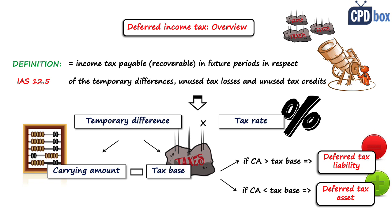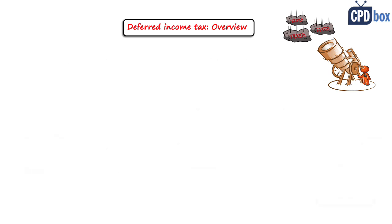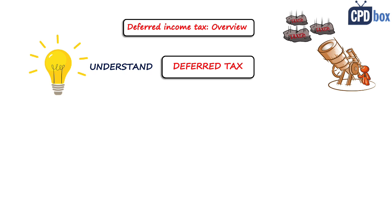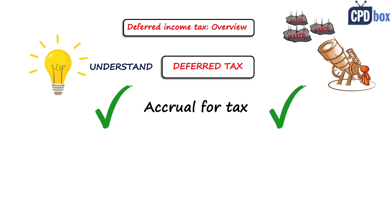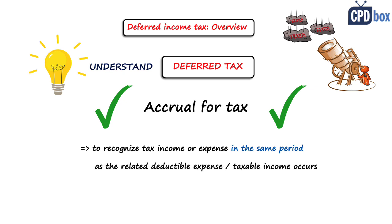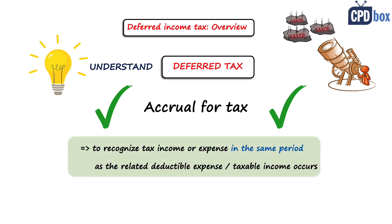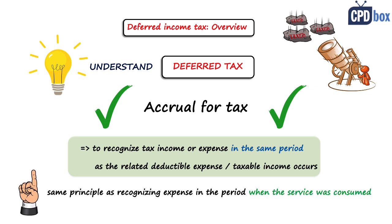These were official definitions, but what does that all actually mean? To understand deferred tax, let's make clear what it is not. It is not a tax that you will pay in the future. Instead, it is an accrual for tax or provision for tax, because the goal is to show the tax effect of some transaction in the same period as the related deductible expense or taxable income occur. It is the same as the accrual principle — to recognize expense in the period when the service was consumed, not when it was paid. At year-end, accountants find services consumed but not yet invoiced, and make accruals. Similarly, you make an accrual for tax with deferred tax.